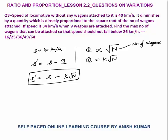The language of this question is difficult, but understand it word by word: speed diminishes by a quantity Q, so new speed = original speed minus Q. Q is directly proportional to the square root of the number of wagons. The question states that when 9 wagons are attached, speed = 34. So: 34 = 40 − K√9, which gives K × 3 = 6, so K = 2.